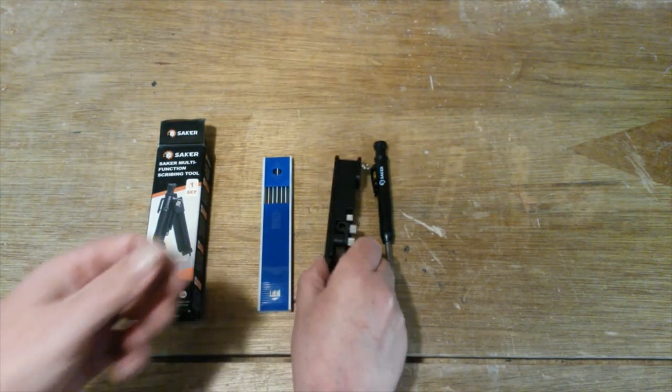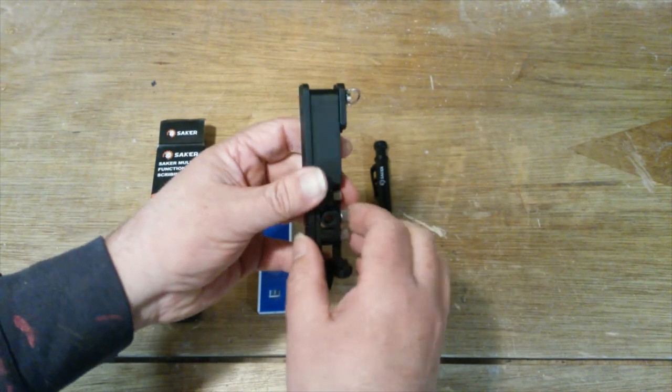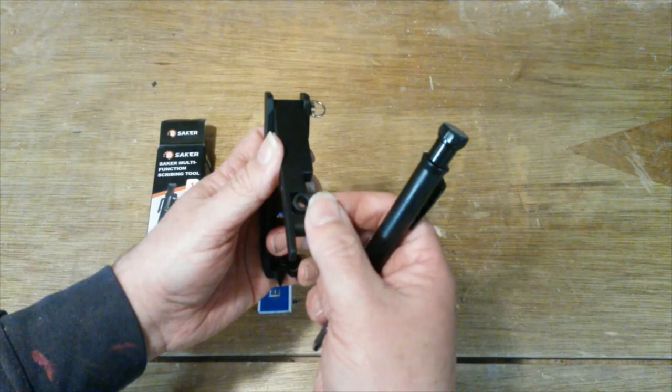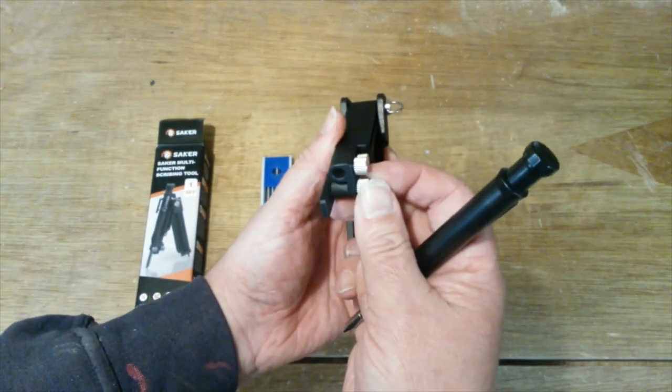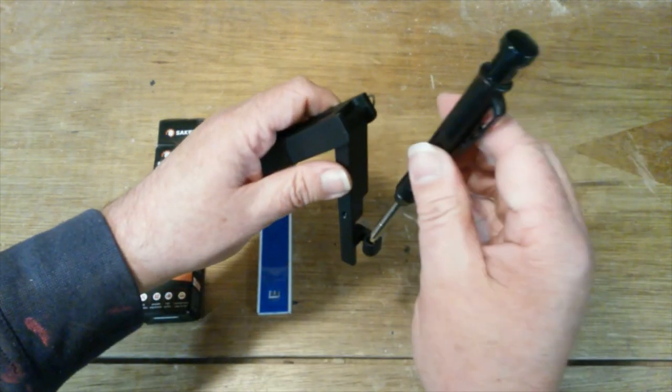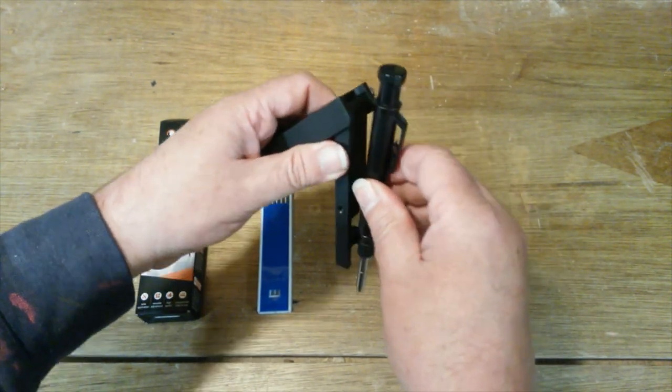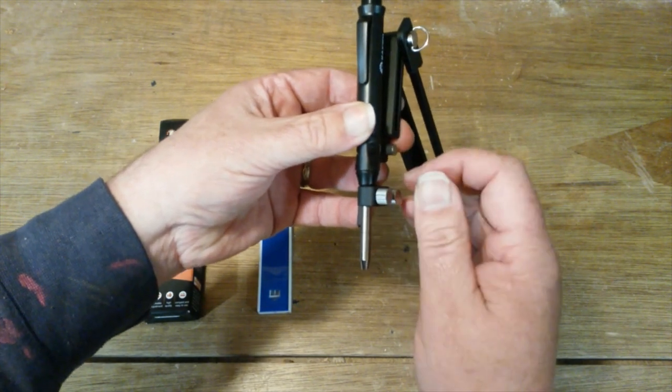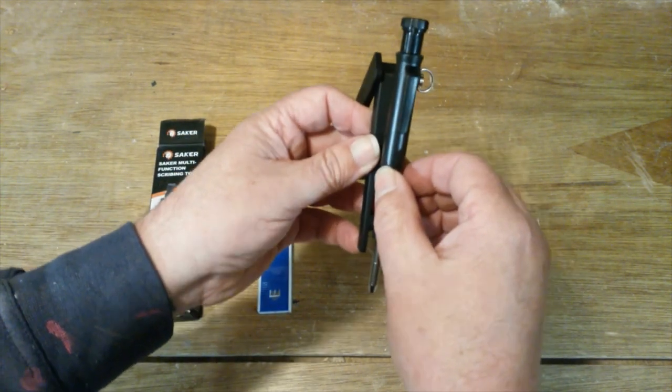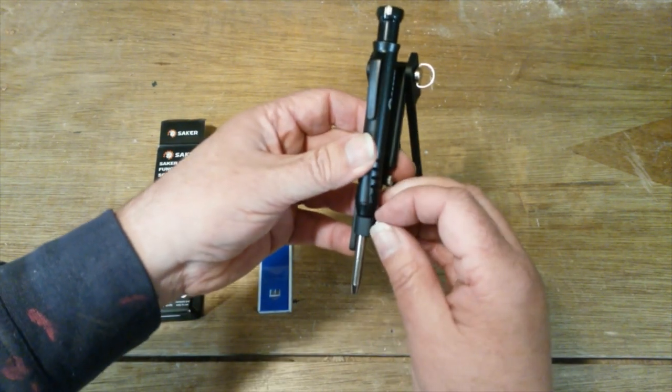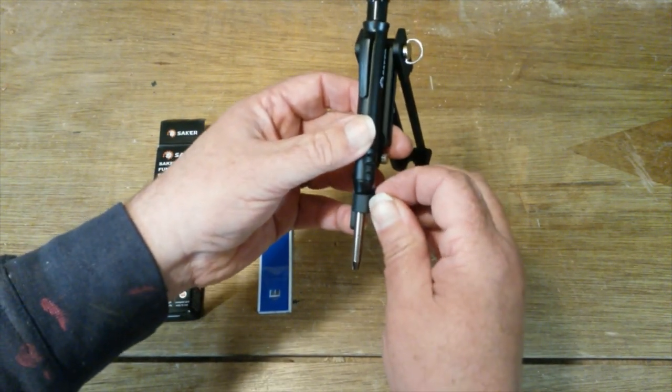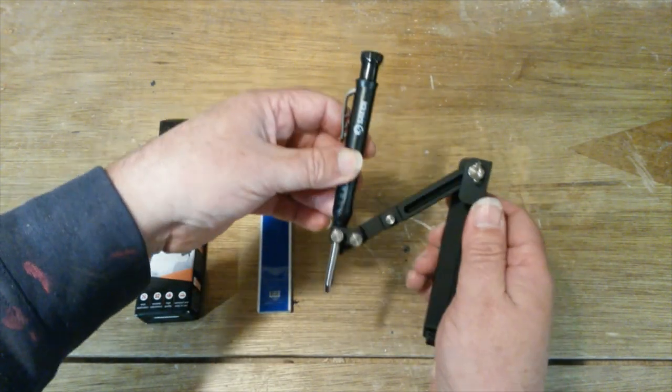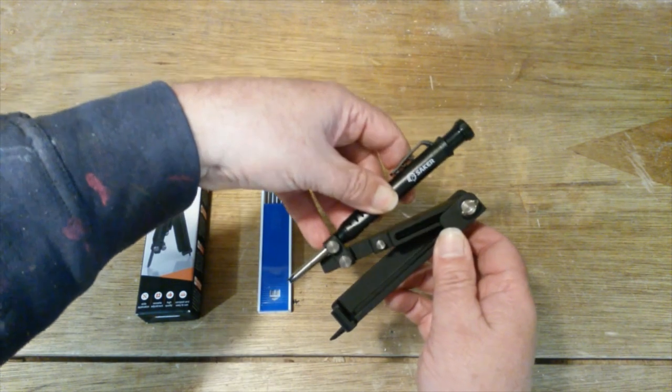Right, to fit the pencil, loosen this off, pull this out, lock it up. Loosen this, pull this section out, lock it back up. Insert the pencil into this section, lock it up. Obviously you can set the depth of that where you want it. You can move it about as much as you want.